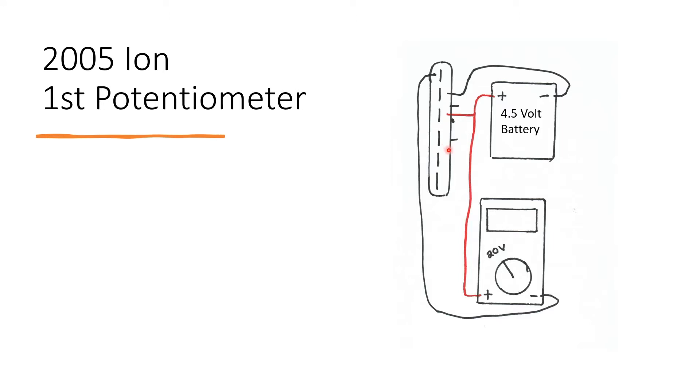The plug should be facing towards you just like this. The multimeter should be set to 20 volts. The negative from the multimeter should connect to the top pin, or the first pin, just like this.